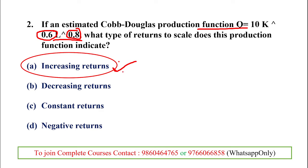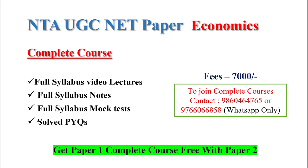Since the sum is above one, it indicates increasing returns to scale. When the value is below one, it indicates decreasing returns to scale. When equal to one, it is constant returns to scale.